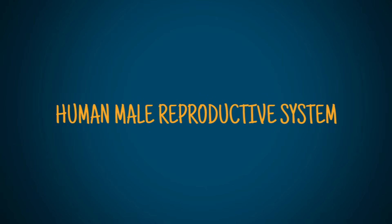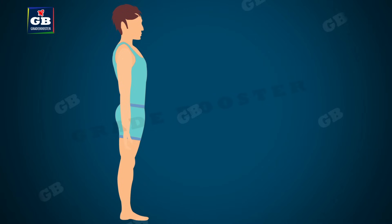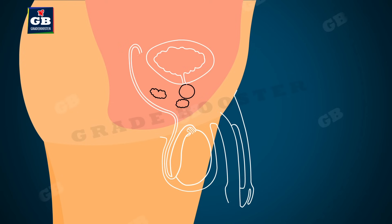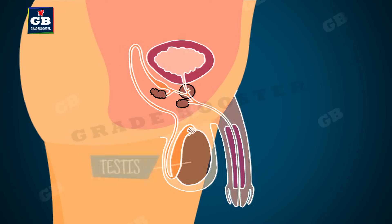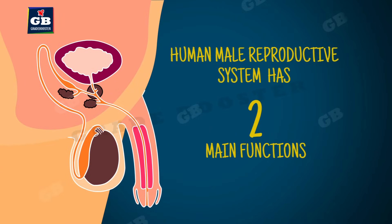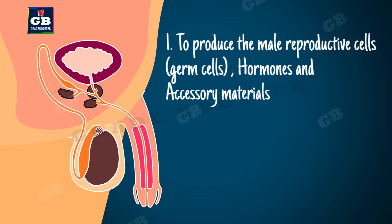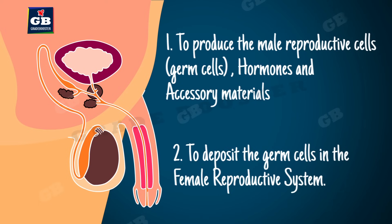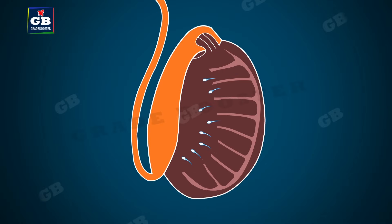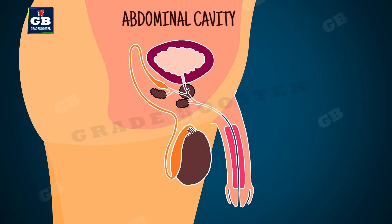Human male reproductive system: The human male reproductive system is made up of different organs like testes, scrotum, vas deferens, seminal vesicles, prostate gland, penis, and urethra. It has two main functions: one, to produce male reproductive cells, hormones, and accessory materials; and two, to deposit them in the female reproductive system. The formation of germ cells or sperms takes place in the testes.